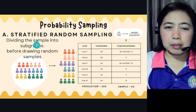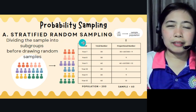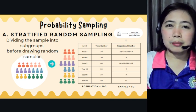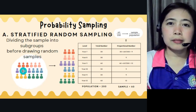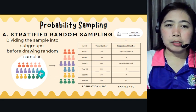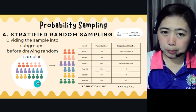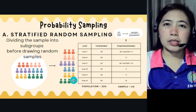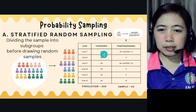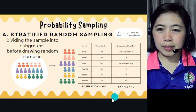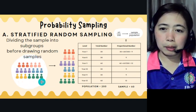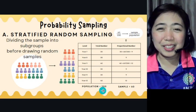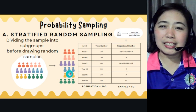Under probability sampling, the first subtype is stratified random sampling. It involves dividing the sample into subgroups before drawing random samples. For example, all PWDs in Mandawi City are the population. You divide them into subgroups: PWDs in Kasuntingan, PWDs in Luok, PWDs in Mantuyong. From a population of 200, you take a sample of 60 — divided proportionally across subgroups.